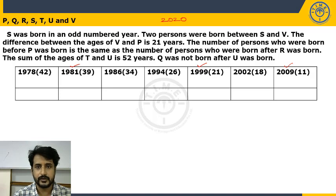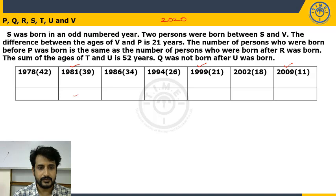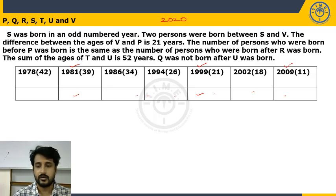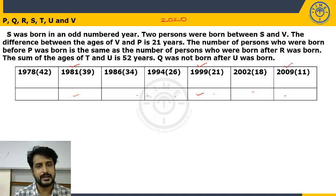Two persons were born between S and V. Testing each of the three possible positions for S: in all three cases (S in 1981, 1999, or 2009) there is a valid placement with two persons between S and V. So we still have three possibilities and need to apply further clues.